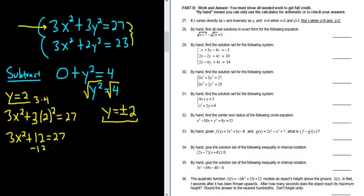So minus 12, minus 12. That gives us 3x squared equals 15.